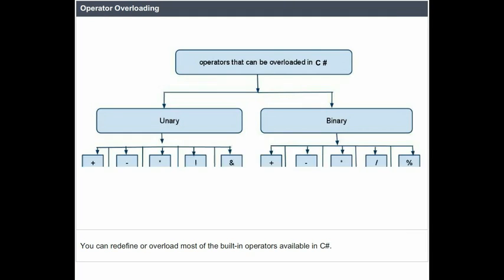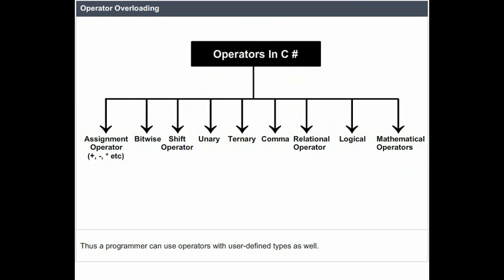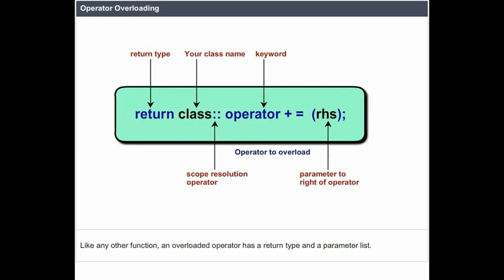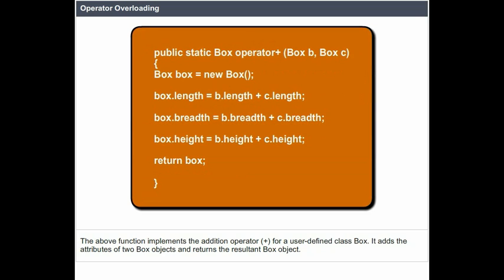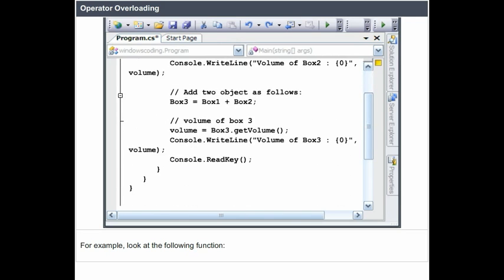Operator overloading: you can redefine or overload most of the built-in operators available in C#, allowing a programmer to use operators with user-defined types as well. Overloaded operators are functions with special names — the keyword operator followed by the symbol for the operator being defined. Like any other function, an overloaded operator has a return type and a parameter list. The above function implements the addition operator plus for a user-defined class Box, adding the attributes of two Box objects and returning the resultant Box object. When the code is compiled and executed, it produces the following result.